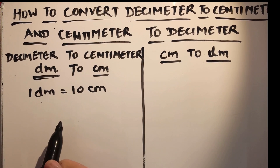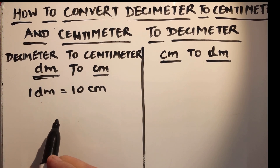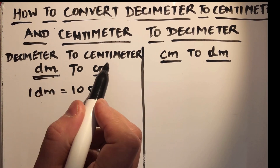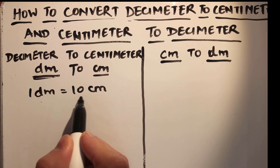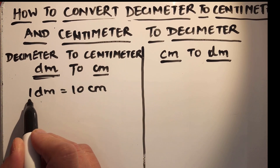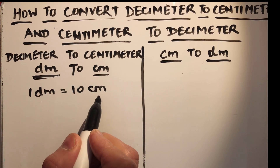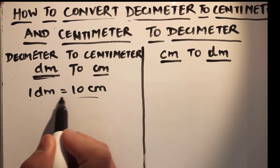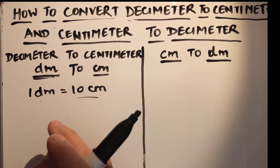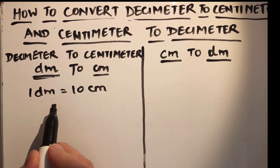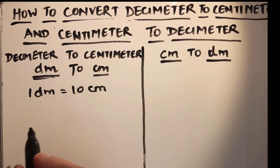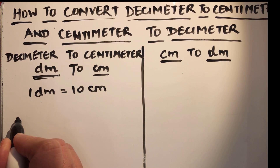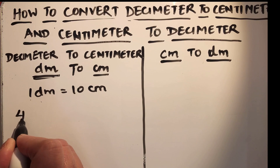We can learn this by the name: deci means 10 and centi means 100, so this is 10 and this is 100. If you divide both things by 10, you get that 1 decimeter is 10 centimeters. So let's get started.